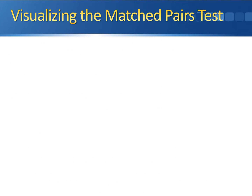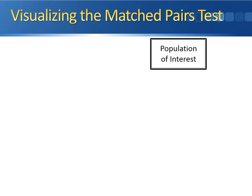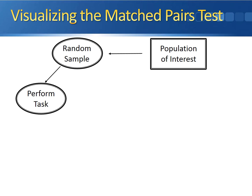Here's a visualization of how a matched pairs test works. We begin with the population of interest. From there, we take a random sample from the population and have each member of the sample perform the task that we're interested in. We take a measurement of the variable, average the results, and calculate what we'll call X-bar before.